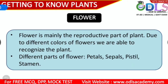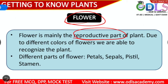As you know, the most beautiful part of the plant is called the flower. But the flower is mainly the reproductive part of the plant — it is the plant's main reproductive part. Through this part, the plant creates a new generation. Due to the different colors of flowers, we are also able to recognize plants — flowers help us identify which plant it is.